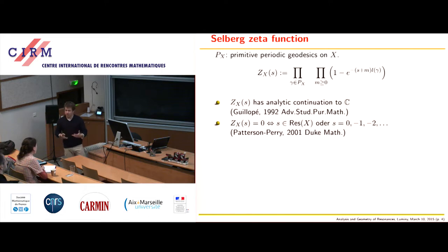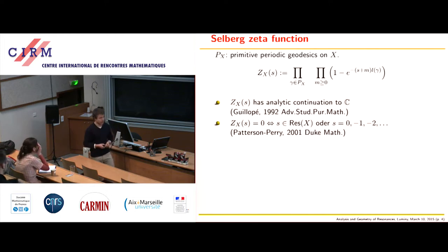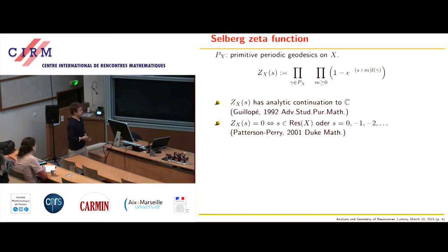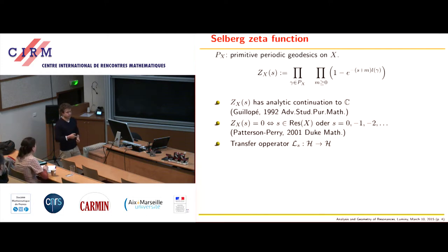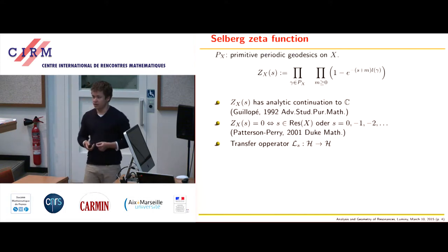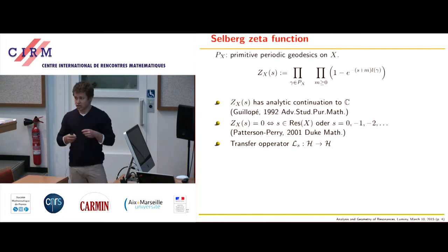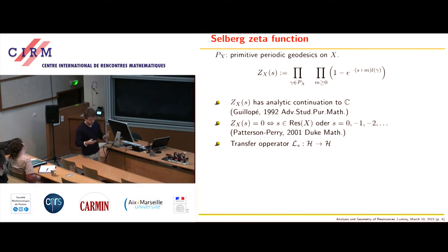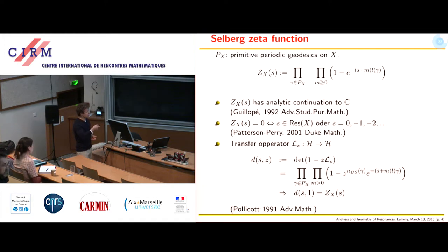The Patterson-Perry correspondence says that a value s is a zero of the Selberg Zeta function if and only if s is either a resonance or a topological zero, which can only occur at negative integers. Instead of studying resonances as poles of a meromorphic continuation of the resolvent operator, we can study resonances as zeros of a holomorphic function, which is technically a little bit easier. The last tool I need is the transfer operator approach — the dynamical Zeta function for these Schottky surfaces.